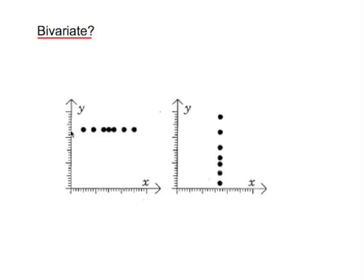In the first example, x varies but y remains constant. And in the second example, x remains constant while y varies. So these two are examples of univariate data, not bivariate.